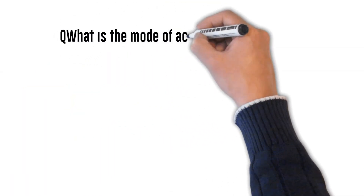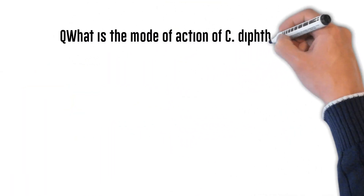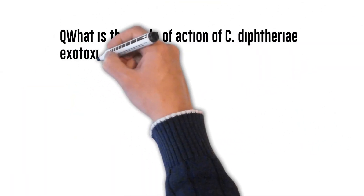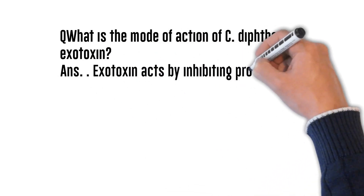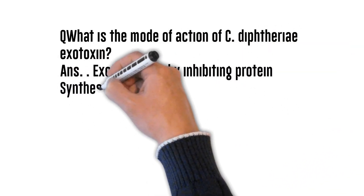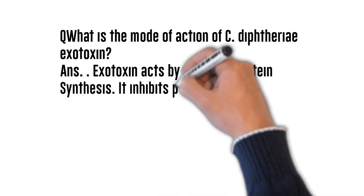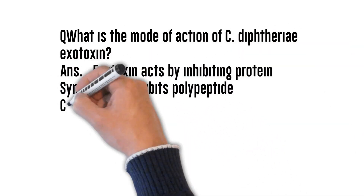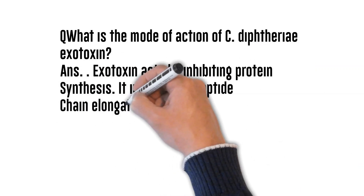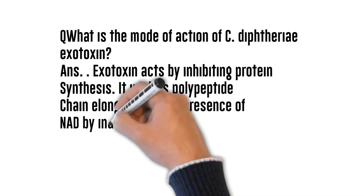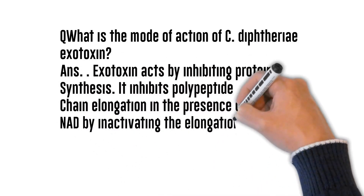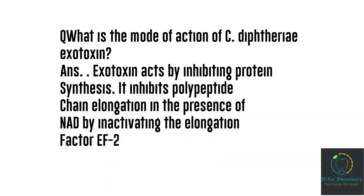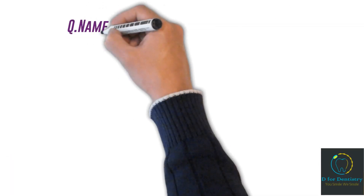Question: What is the mode of action of C. diphtheriae exotoxin? Answer: Exotoxin acts by inhibiting protein synthesis. It inhibits polypeptide chain elongation in the presence of NAD by inactivating elongation factor EF-2.